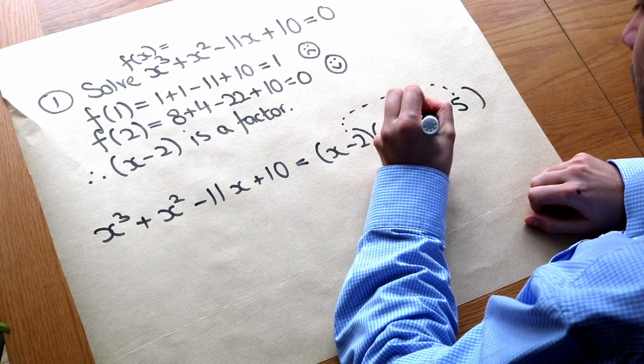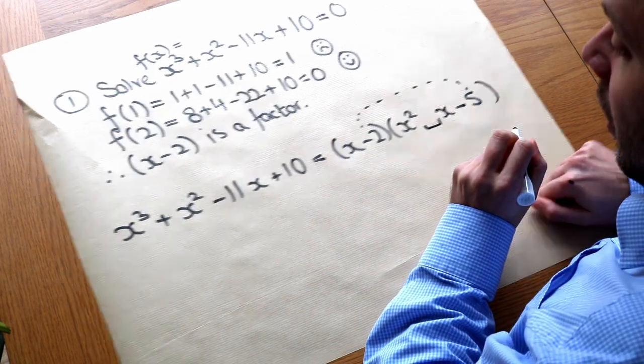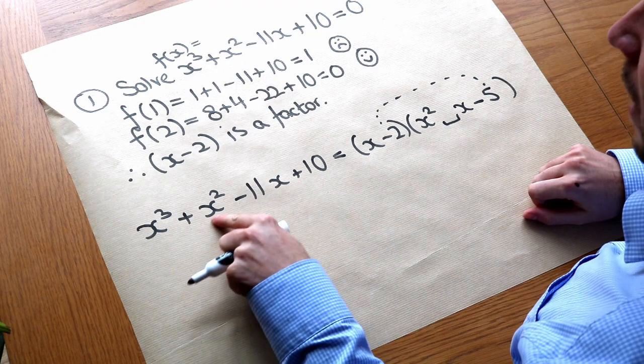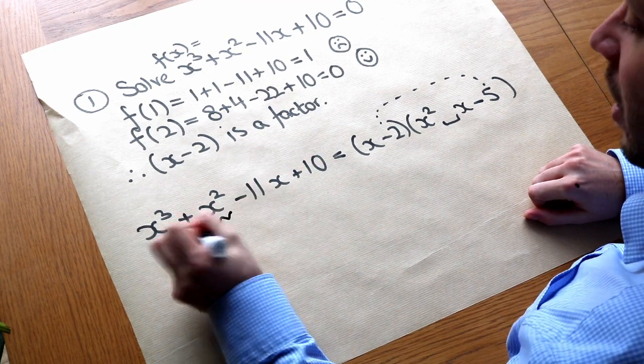Now we've also got plus something or minus something x but we don't know what that is. And do you remember the way we could do this is trying to match either the x squared term or the x term. So let's just say we want to match this x squared term. We need to have plus one x squared in this expansion.